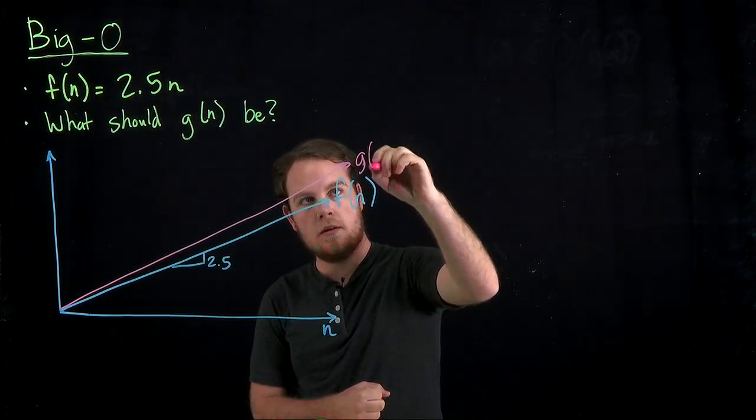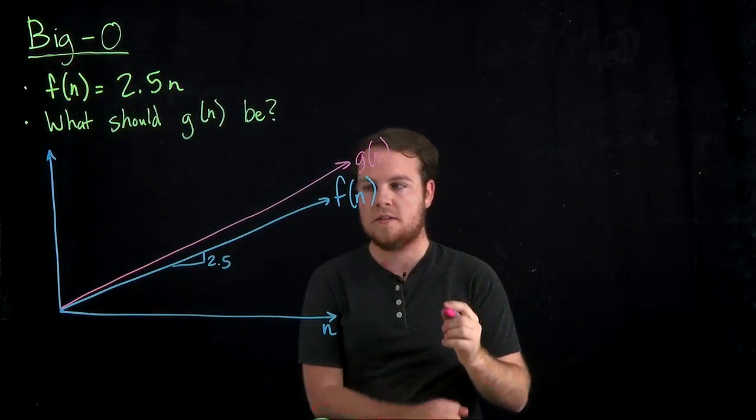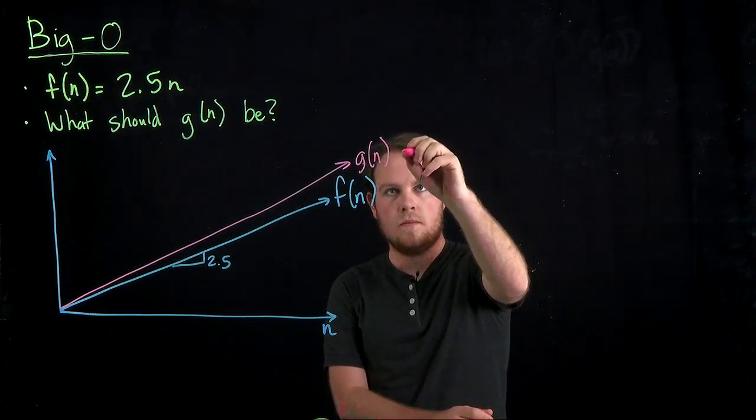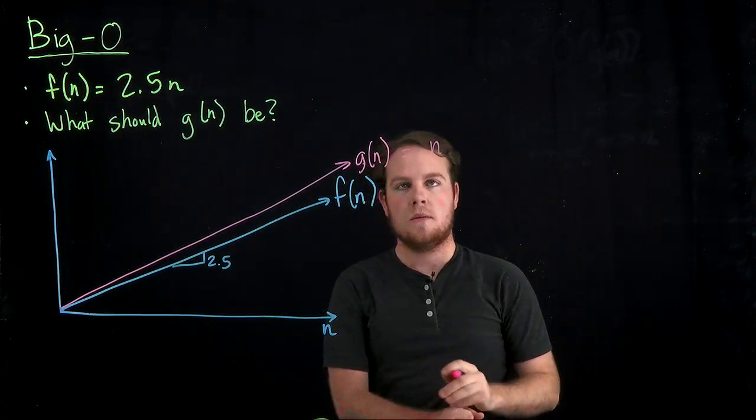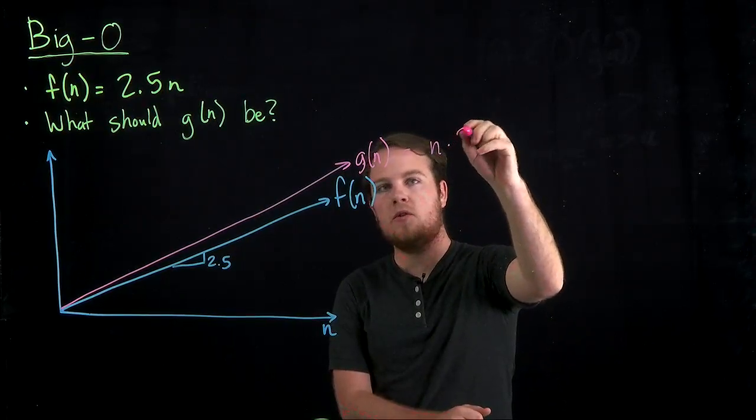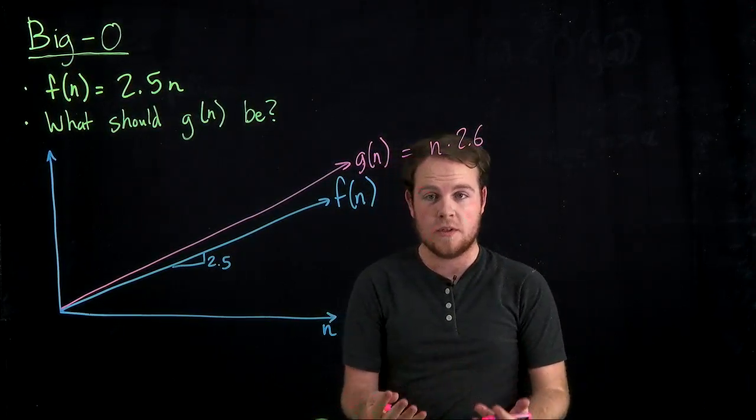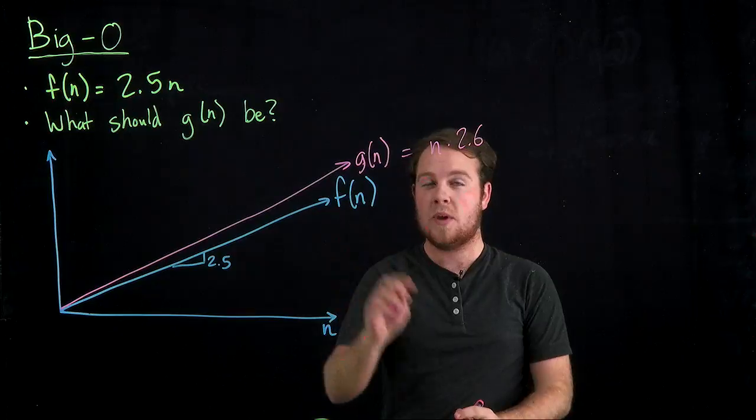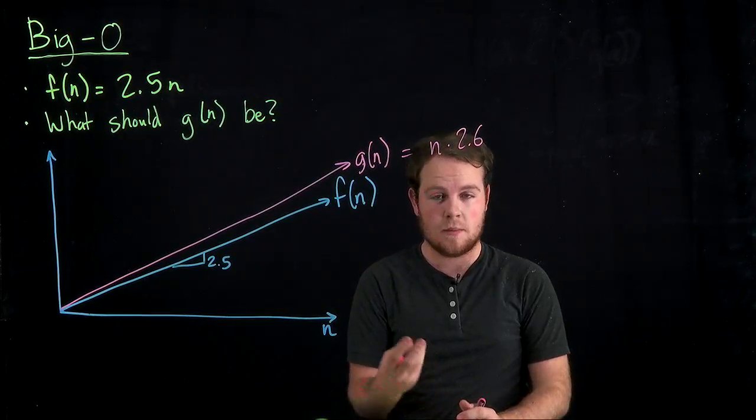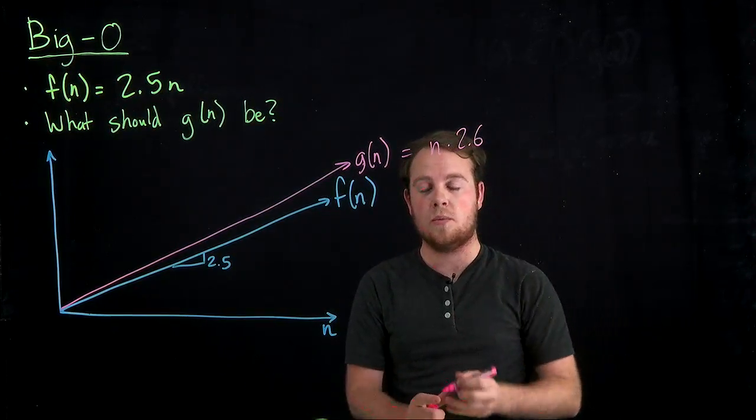so the easiest answer would be to draw g of n slightly larger than f of n. So this is g of n, and let's say it's equal to n but multiplied by 2.6. That way it's always larger than f of n. We could actually go a little bit tighter, tighter bound, and call it 2.5 if we wanted.